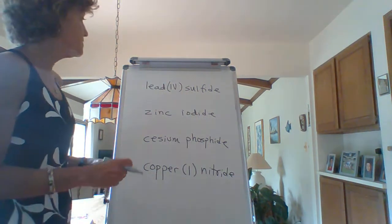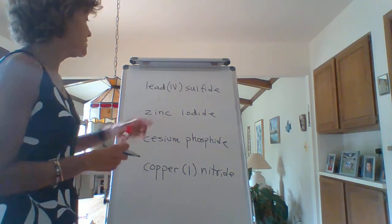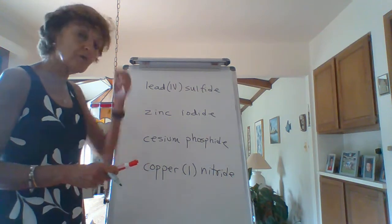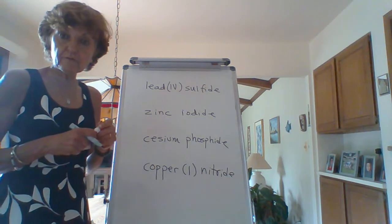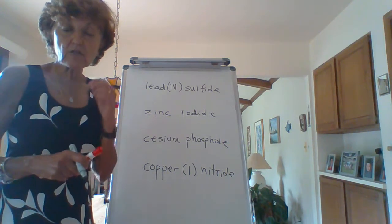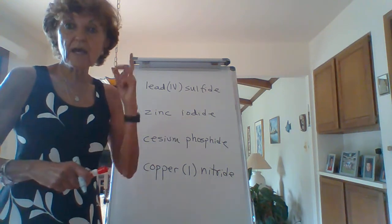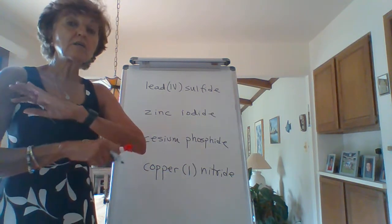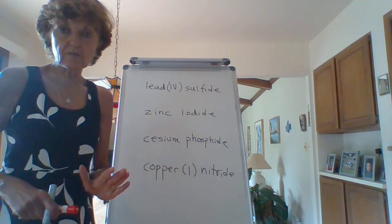Okay. So I put four different ionic compound names, binary ionic compound names on the board. Notice that I have a Roman numeral for this one and a Roman numeral for this one. Why are there Roman numerals here? Because lead and copper are both variable charge metals. Why don't I have a Roman numeral for zinc and for cesium? Because those are fixed charge metals. So it's really important for you guys to know which ones are the fixed charge metals. Remember the fixed charge metals. One more time. Group 1a, group 2a, aluminum, gallium, zinc, cadmium, silver. Consider all other metals variable charge. Okay. That will make your life so much easier.